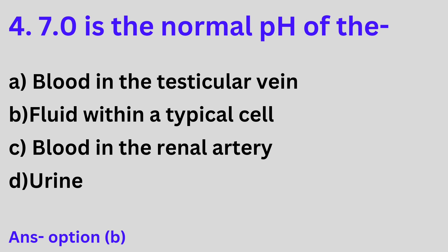Question 4: 7.0 is the normal pH of A. Blood in the testicular vein, B. Fluid within a typical cell, C. Blood in the renal artery, D. Urine. Option B is the correct answer. 7.0 is the normal pH of fluid within the typical cell.